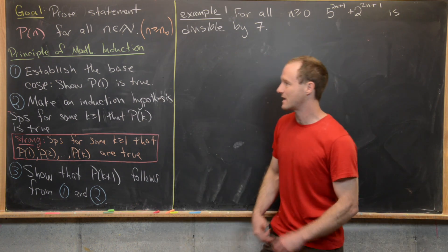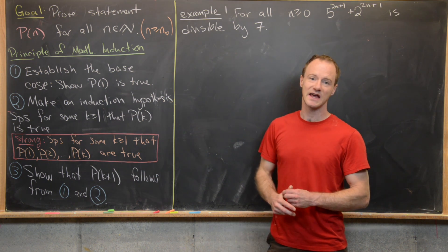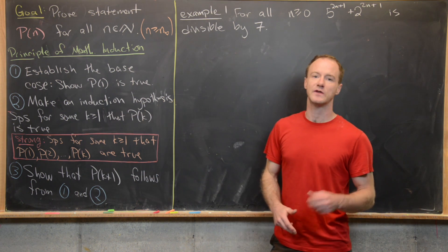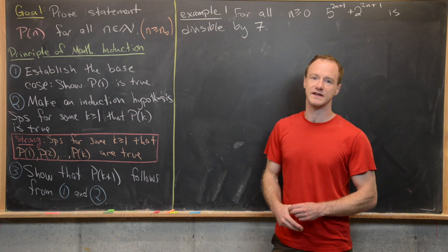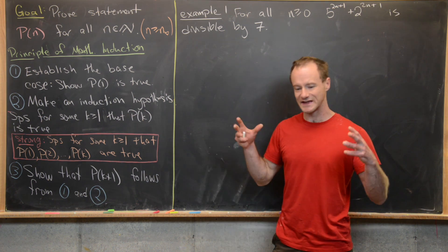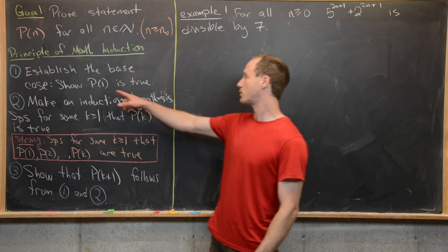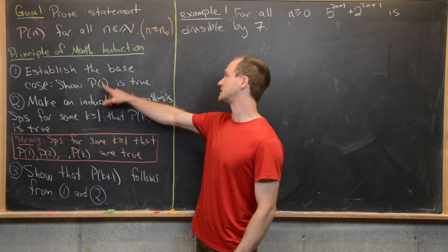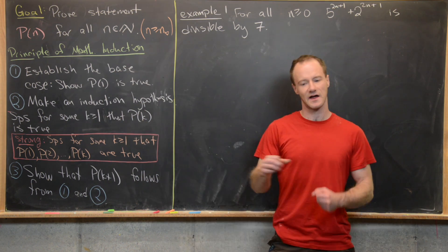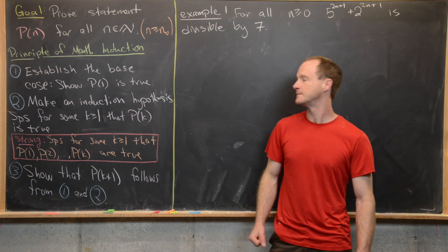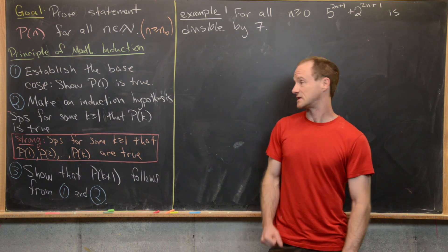The first step is to establish the base case. We want to show that P evaluated at 1 is true — in other words, the first statement is true. Sometimes this 1 would be replaced with N-naught as your starting point. That should be fairly simple.